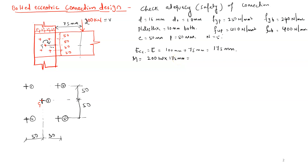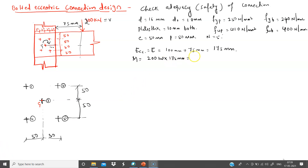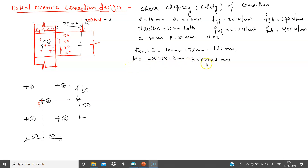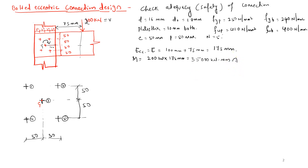Calculating the moment: M = 200 kN × 175 mm = 35,000 kN·mm. So all five bolts are subjected to a clockwise rotation at the CG of the group of bolts.